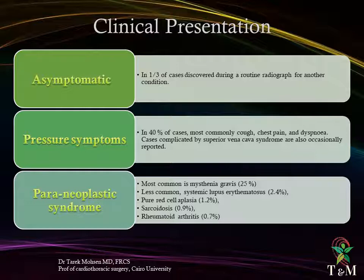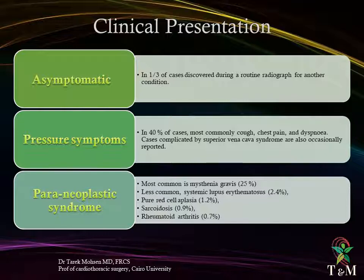Approximately one-third of patients diagnosed with thymoma are asymptomatic at time of presentation. With the growing use of CT scans for diverse conditions as well as screening for lung cancer, the number of asymptomatic patients diagnosed with thymoma is increasing. Nearly 40% of patients present with symptoms related to mass effect, most commonly cough, chest pain, and asthenia. Cases complicated by superior vena cava syndrome are also occasionally reported. Paraneoplastic syndromes — most frequently myasthenia gravis in 25% of cases — are frequently associated with thymoma. Others include systemic lupus erythematosus (2.4%), pure red cell aplasia (1.2%), sarcoidosis (0.9%), and rheumatoid arthritis (0.7%).